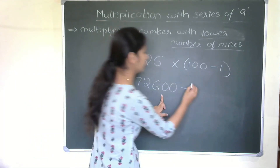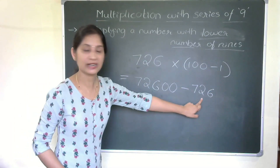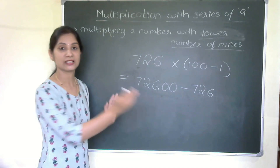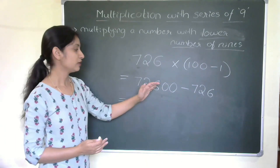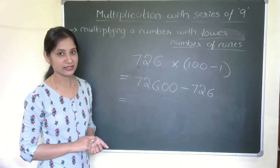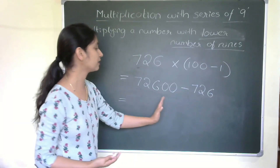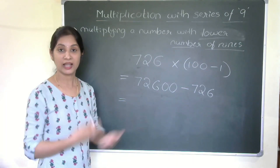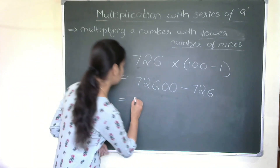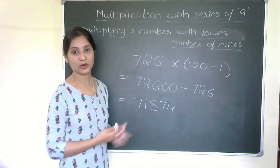So we compute 72600 minus 726. You can use any subtraction method discussed in my videos. The answer is 71874. Once you understand this pattern, you can directly write the answer without working through all the steps explicitly.